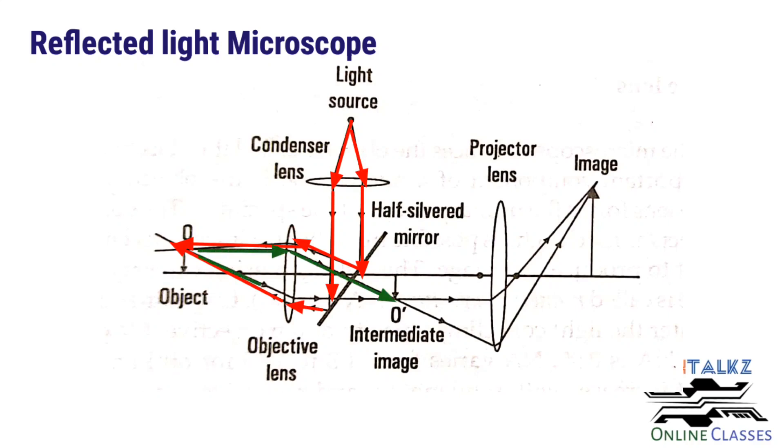And then the reflected rays from the object will be collected by the objective lens. And from the intersection of these rays, a primary image or an intermediate image is formed. Then another lens, the projector lens, is used to magnify the final image.